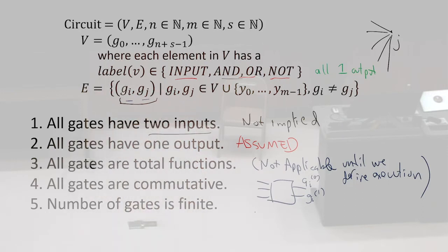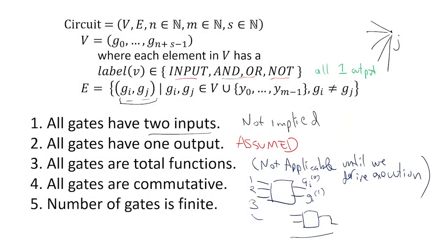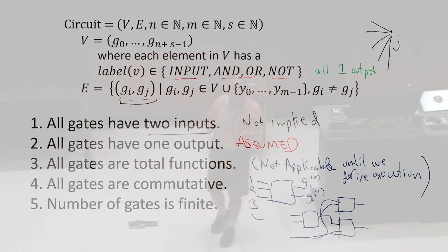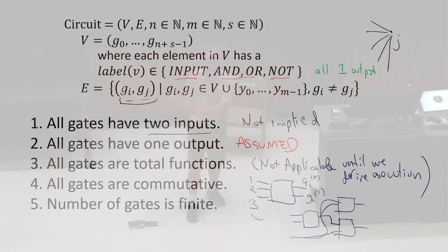We could certainly have something equivalent by combining it into two gates — we could do something that produces those two outputs from separate gates. And because it's universal, there must be some way to replace a three-input, two-output gate with some combination of two-input, one-output gates. So we're not losing any power as far as the functions we can compute.